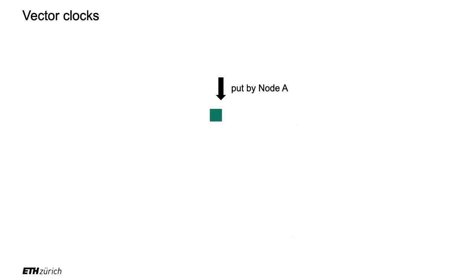Now, vector clocks. Who knows a bit about special relativity? In special relativity, there is no absolute time, and you might have cases where there is no clear before and after. Vector clocks are kind of a generalization to the relativistic case of clocks — but it's actually simpler than it seems.